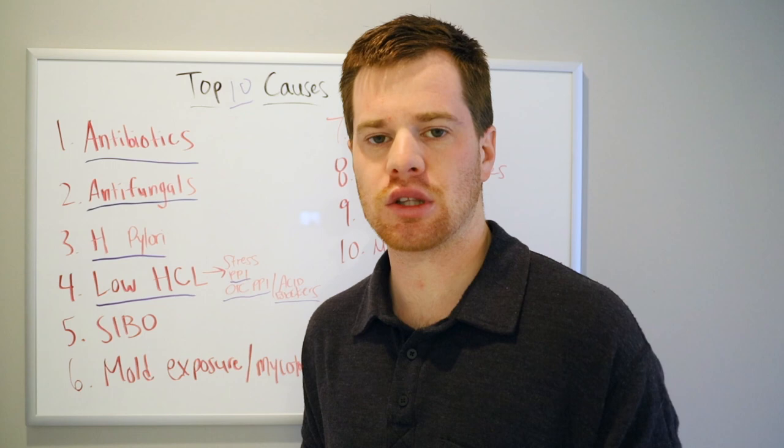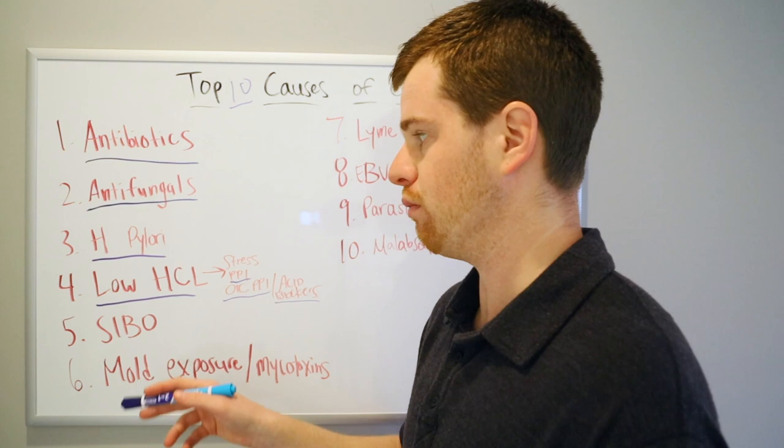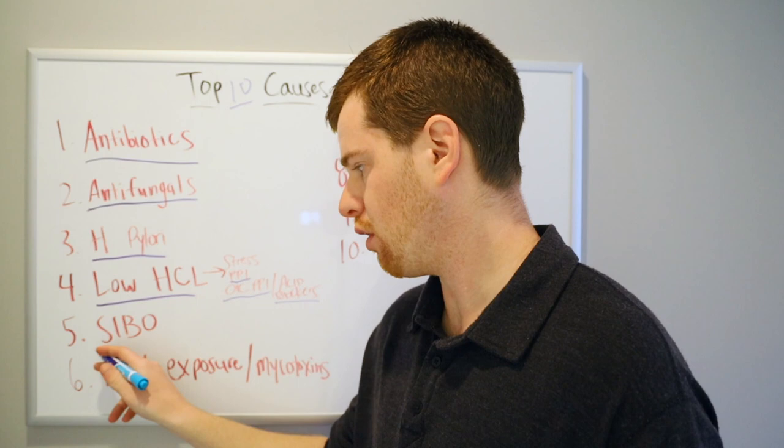SIBO — small intestinal bacterial overgrowth. When you have SIBO, Candida just joins the party. I see this all the time. I rarely see Candida by itself; it's often Candida plus bacteria plus parasites plus H. pylori.